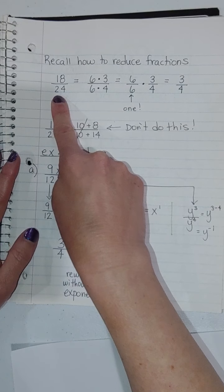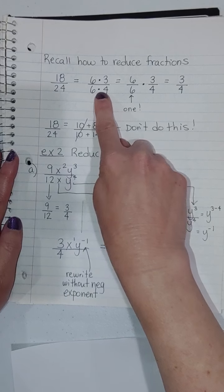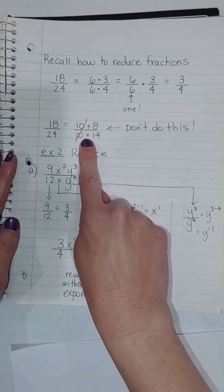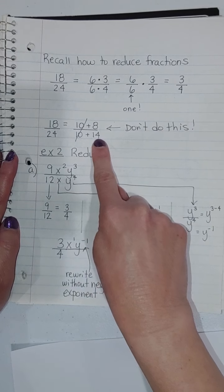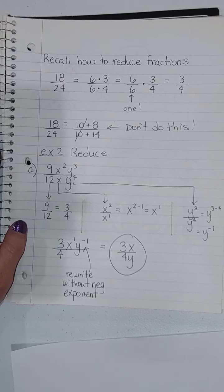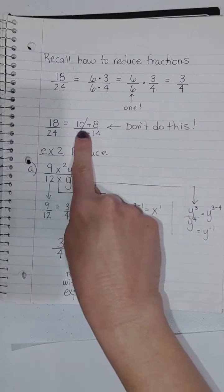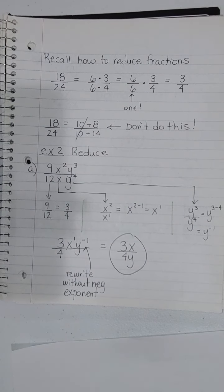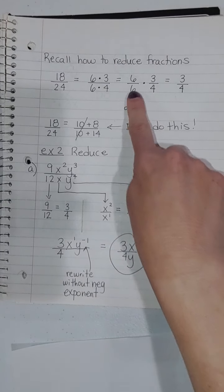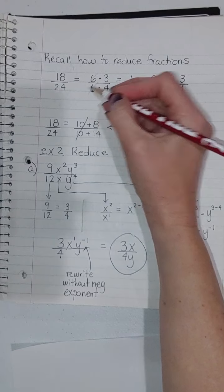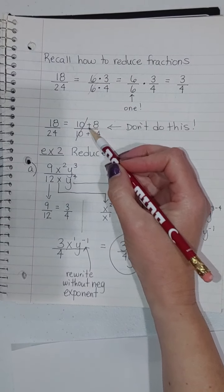This one just looks different — it's just wearing lipstick and a dress. And that multiplication is key. You cannot cancel with addition. If I tried to write 18 as 10 plus 8, and 24 as 10 plus 14, and then cancel those 10s — it doesn't work. That's because of how we add fractions. I cannot take out a 10 and make this 1 plus 8 over 14. And even if I could, adding 1 isn't the same as multiplying by 1. You can only cancel things that are connected by multiplication.